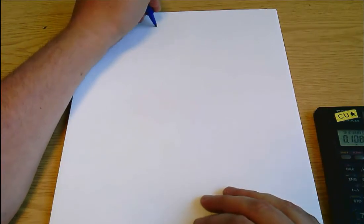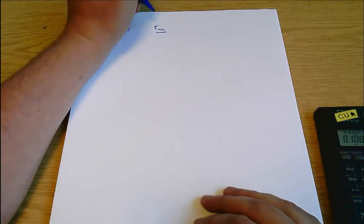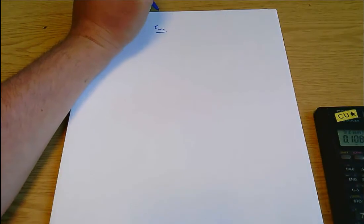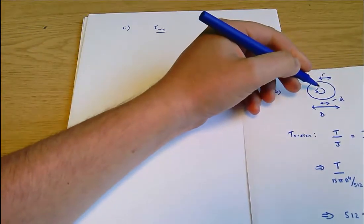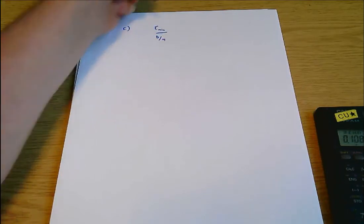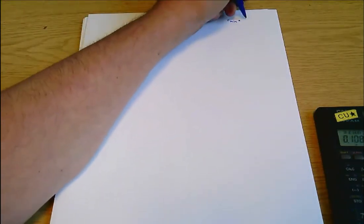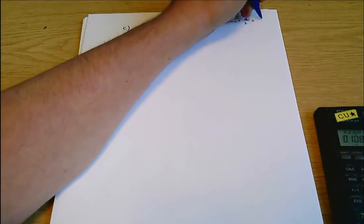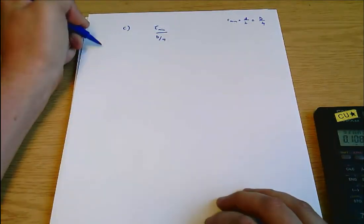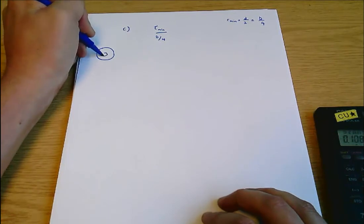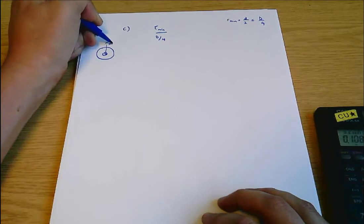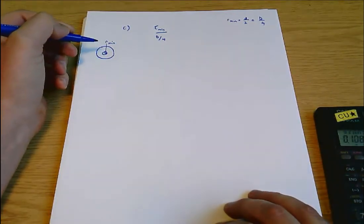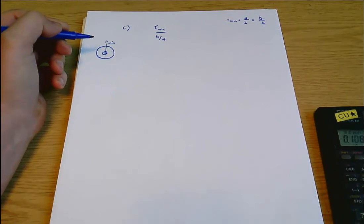So we can say τ_min over r_min. Now r_min is small d over 2 which is capital D over 4. Just make a note of that: r_min equals small d over 2 equals capital D over 4. And the r_min that I'm talking about there is that length there from the central axis to the inside of the tube.